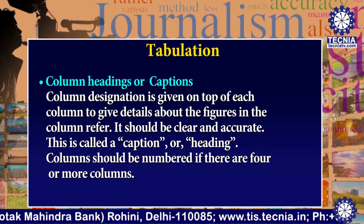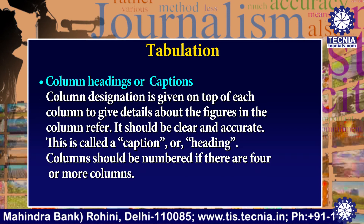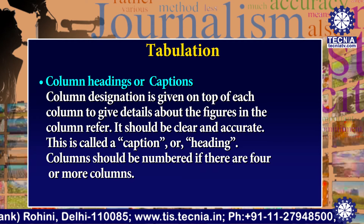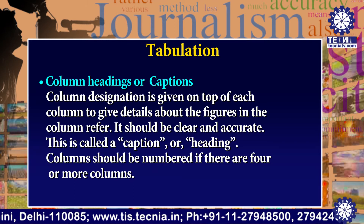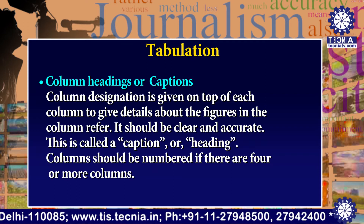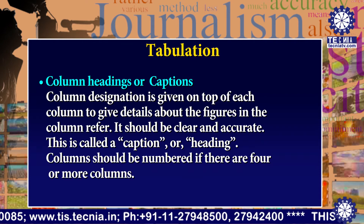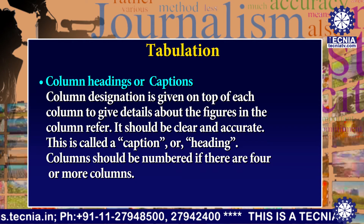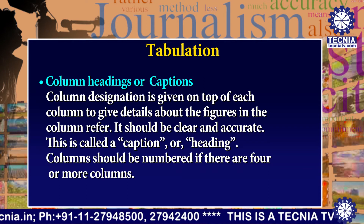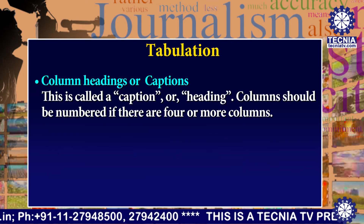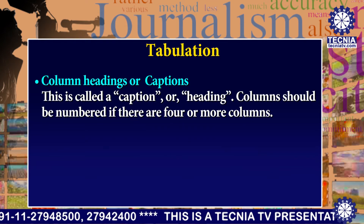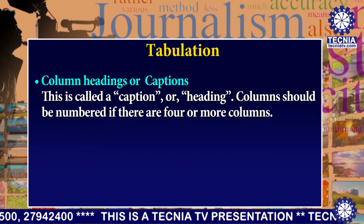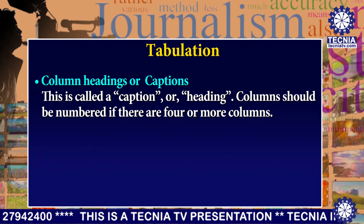Next are column headings or captions. Column designation is given on top of each column to give details about the figures in the column. It should be clear and accurate. This is called a caption or heading. Columns should be numbered if there are four or more columns.